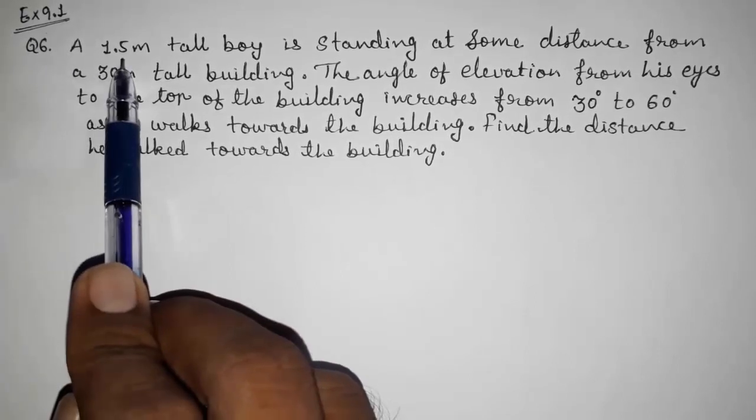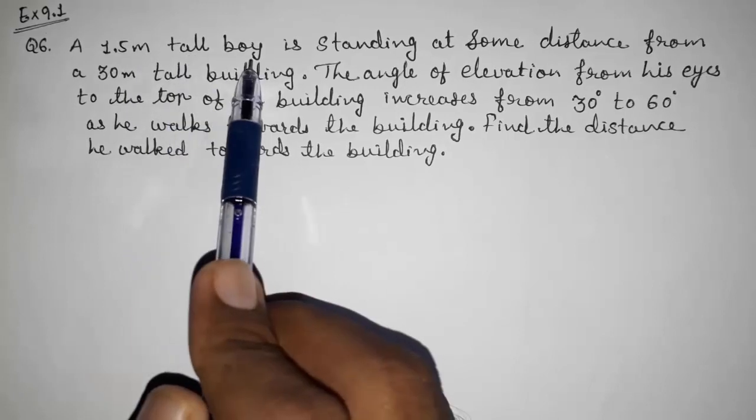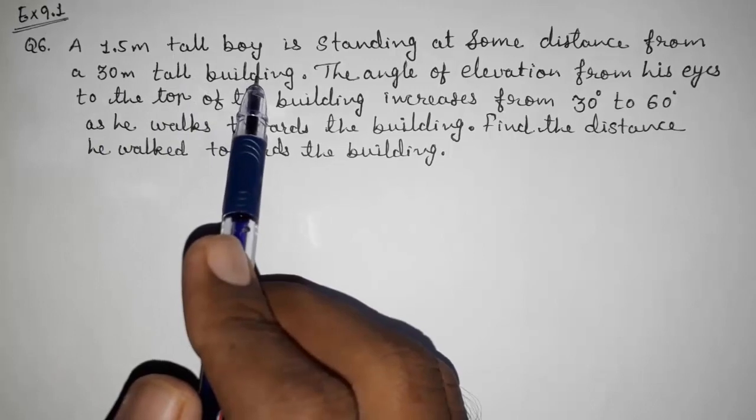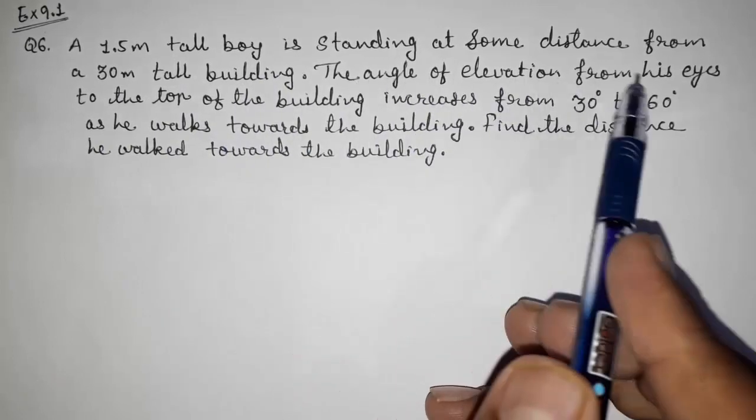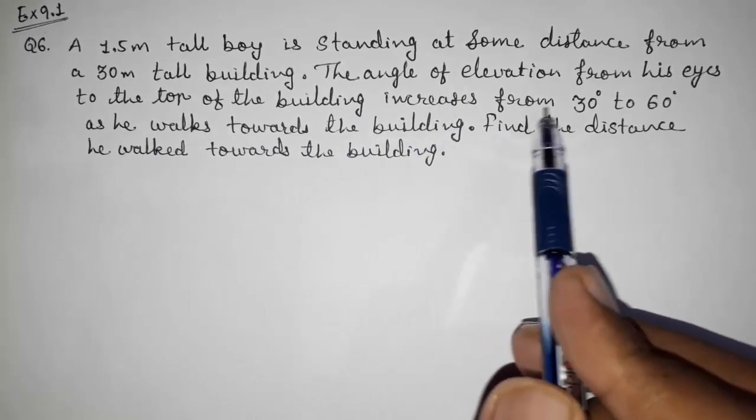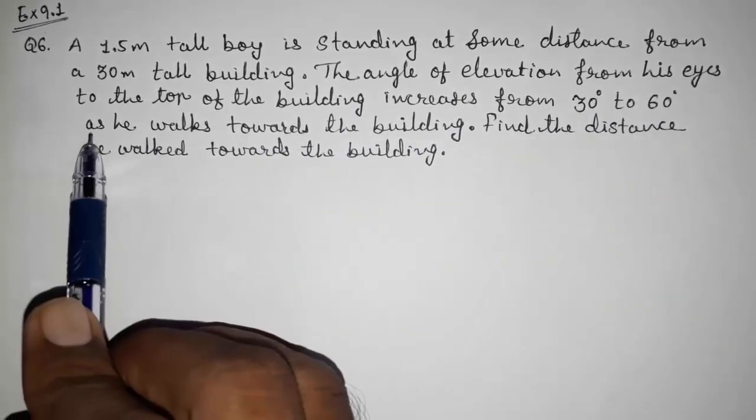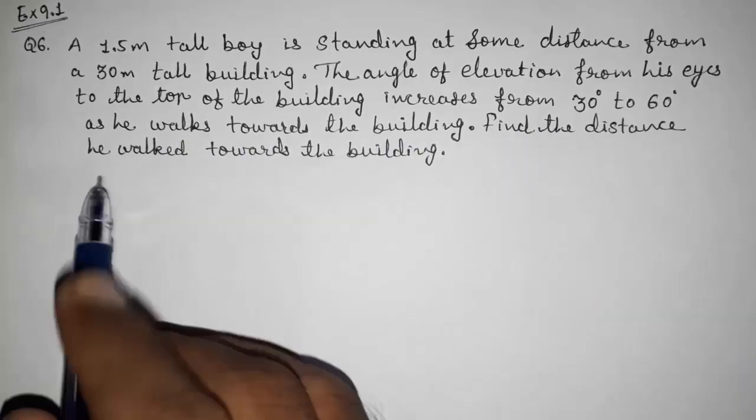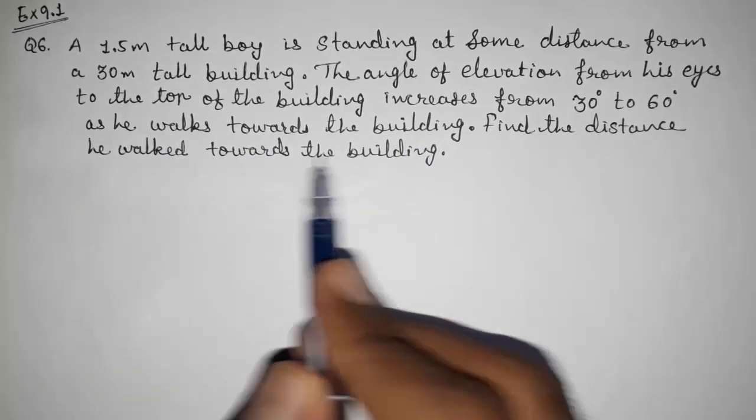A 1.5 meter tall boy is standing at some distance from a 30 meter tall building. The angle of elevation from his eyes to the top of the building increases from 30 degrees to 60 degrees as he walks towards the building. Find the distance he walked towards the building.